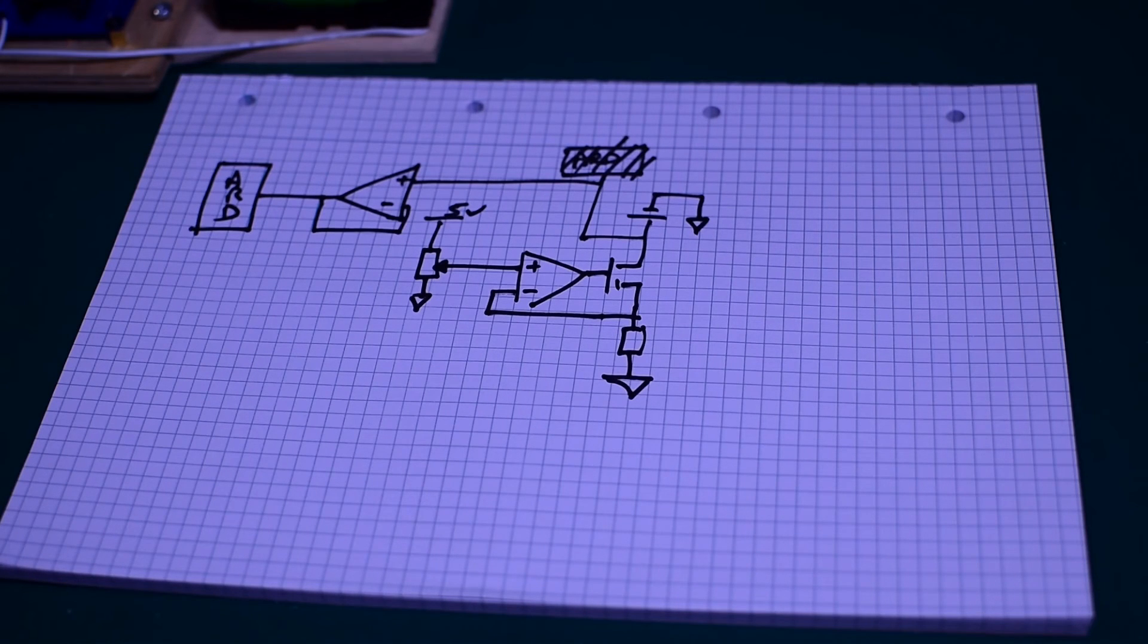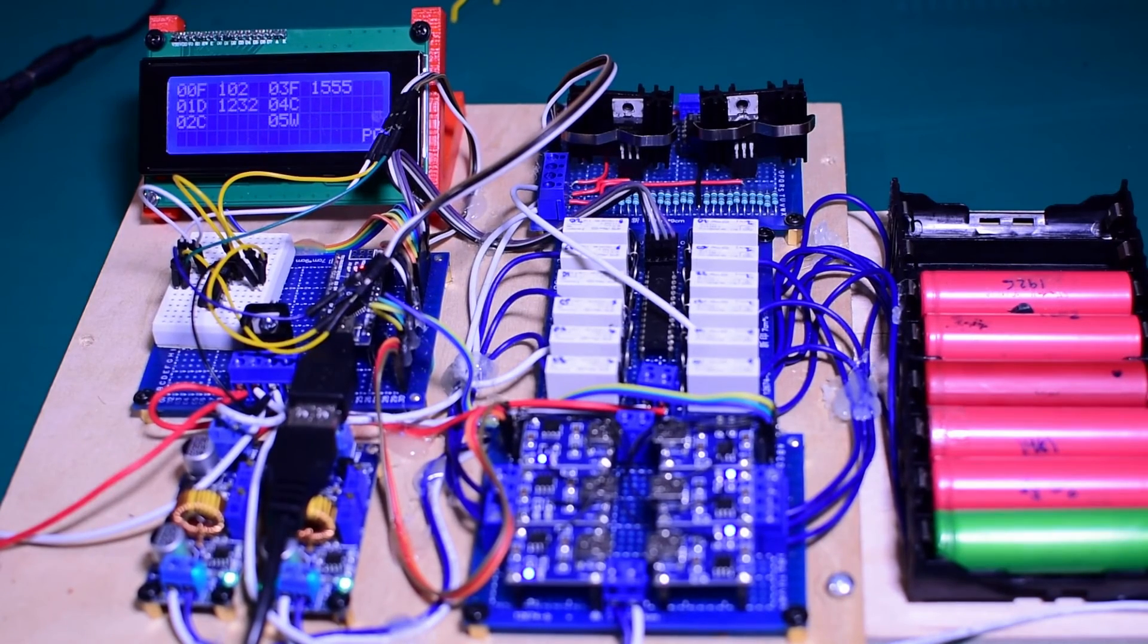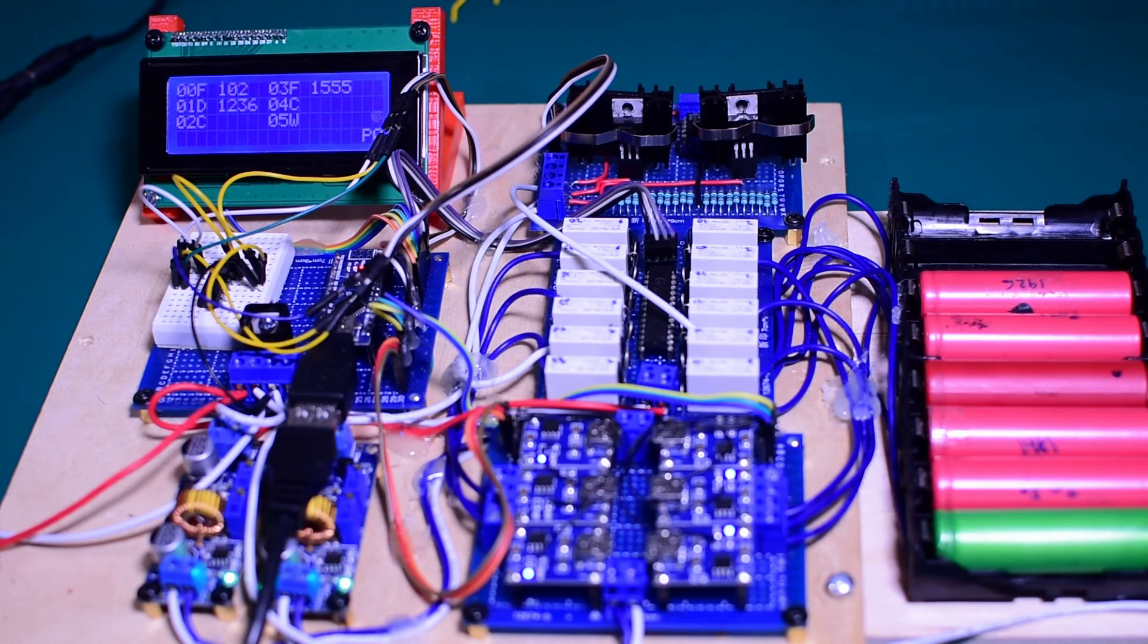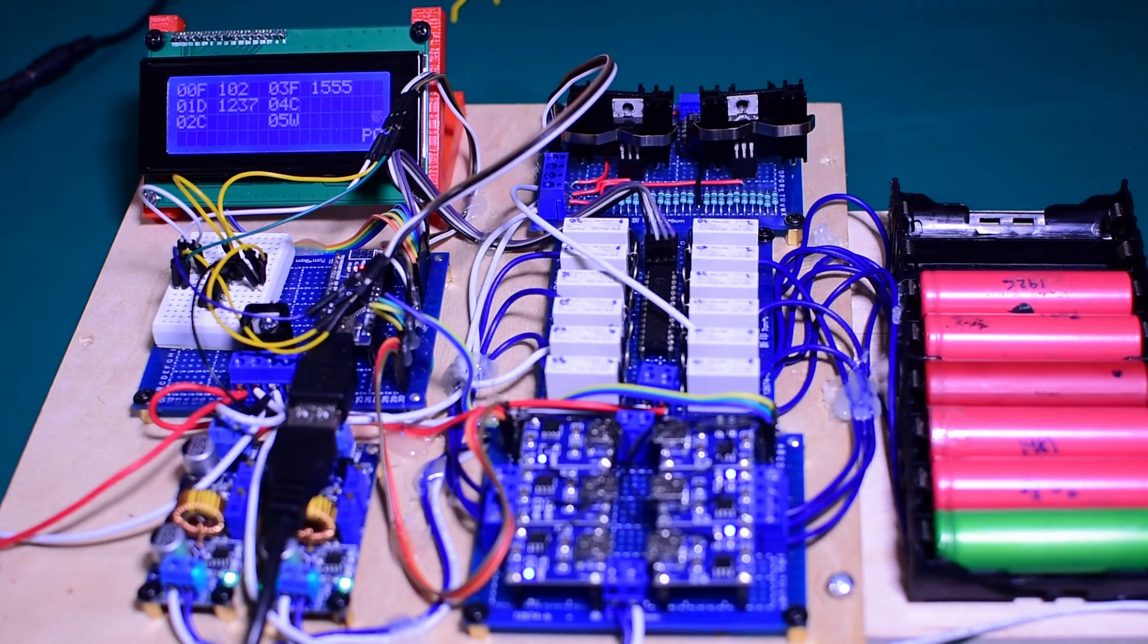So here's the working prototype. We've got six cells in. First cell has already finished at 102 milliamp hours, which is my dud cell—I knew that one was going to do that. I have in there now cell one, which is currently discharging, currently at 1236 milliamp hours, and cell two is currently charging.